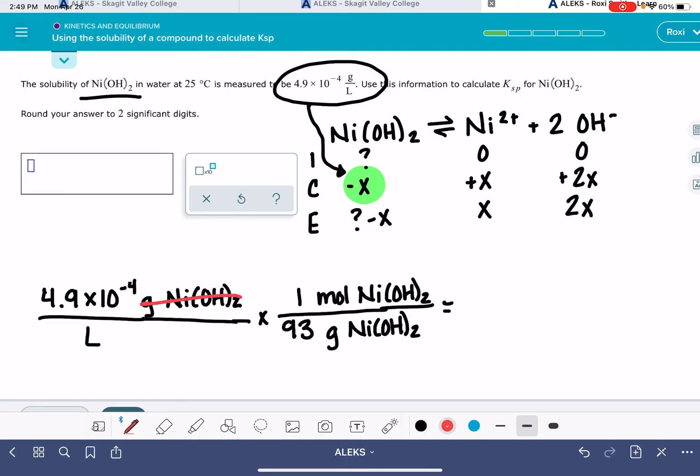So our gram units will cancel out, and this is going to give me 4.9 times 10 to the minus 4 divided by 93. This gives me 5.27 times 10 to the minus 6 moles per liter.